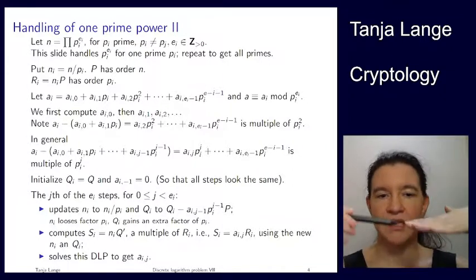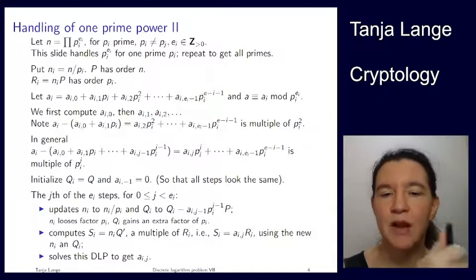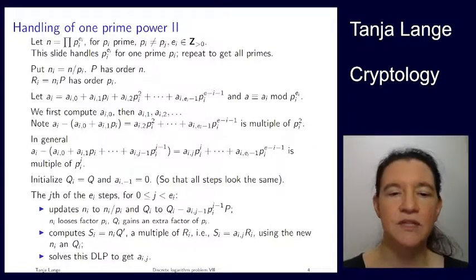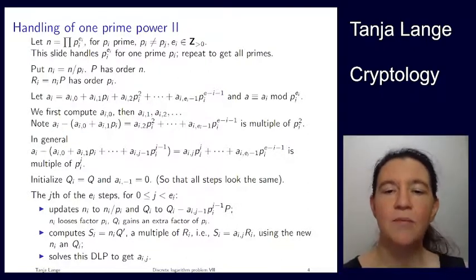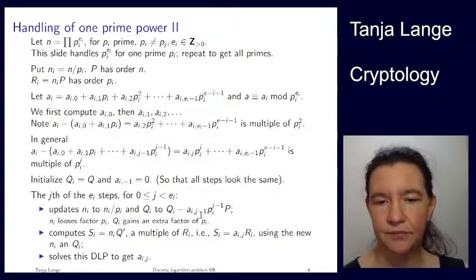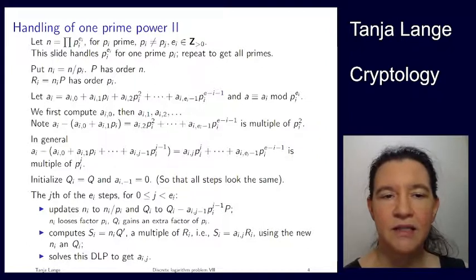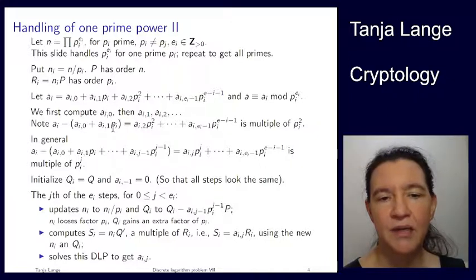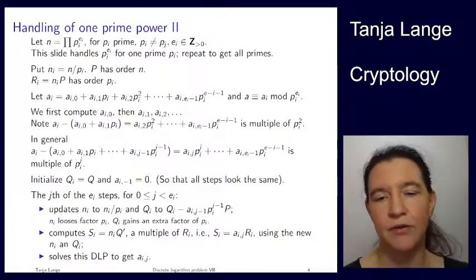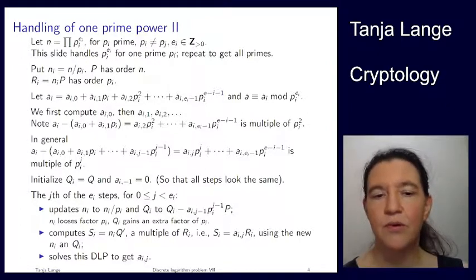Okay, so here are another steps which we're doing for ei times. So we're starting with 0 and we're going up to ei minus 1. So each of those steps we're updating ni by dividing by pi, and we're updating Q by subtracting the new part. So we have already updated it before. So it's now, so say we had subtracted the ai0, and now we have computed the ai1. So now we're subtracting ai1 times pi times the base point P from it.